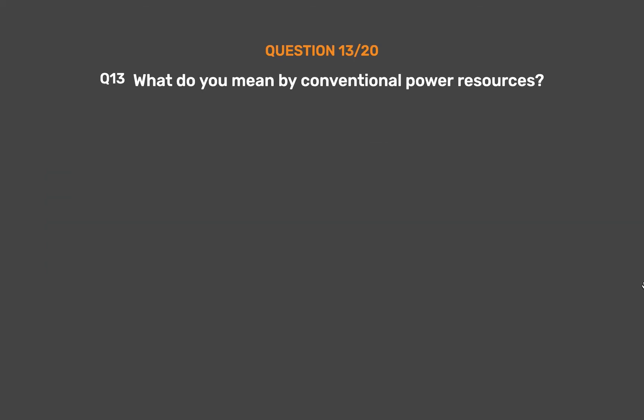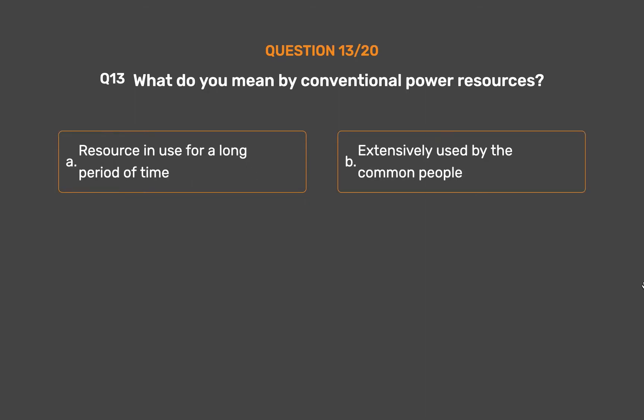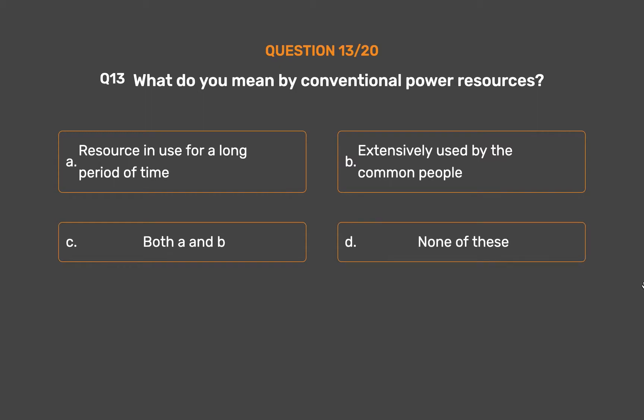Question 13: What do you mean by conventional power resources? Option A: Resources in use for a long period of time. Option B: Extensively used by the common people. Option C: Both A and B. Option D: None of these.